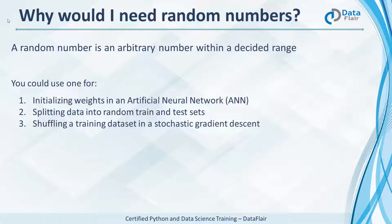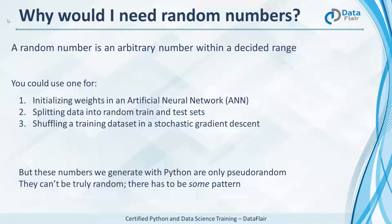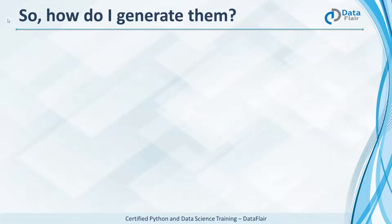But you should know this: the random numbers we generate in Python aren't truly random, but only pseudo-random. There's always some pattern at play. So how do you generate such numbers with Python?